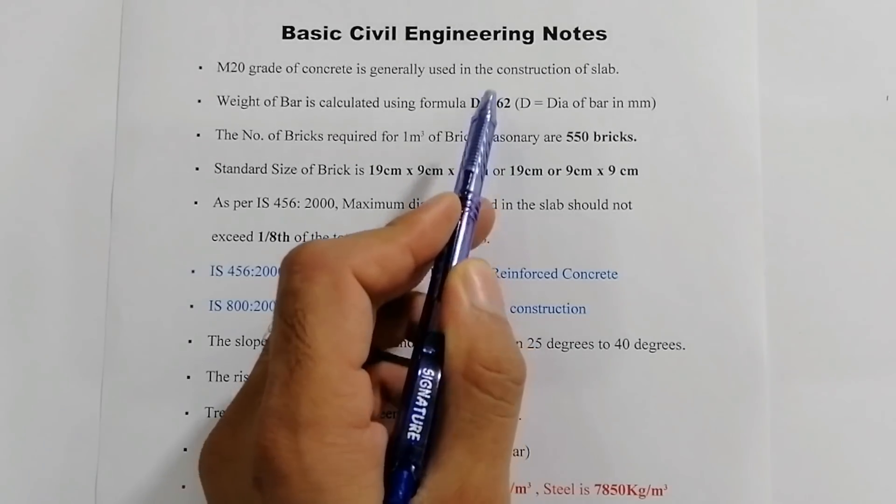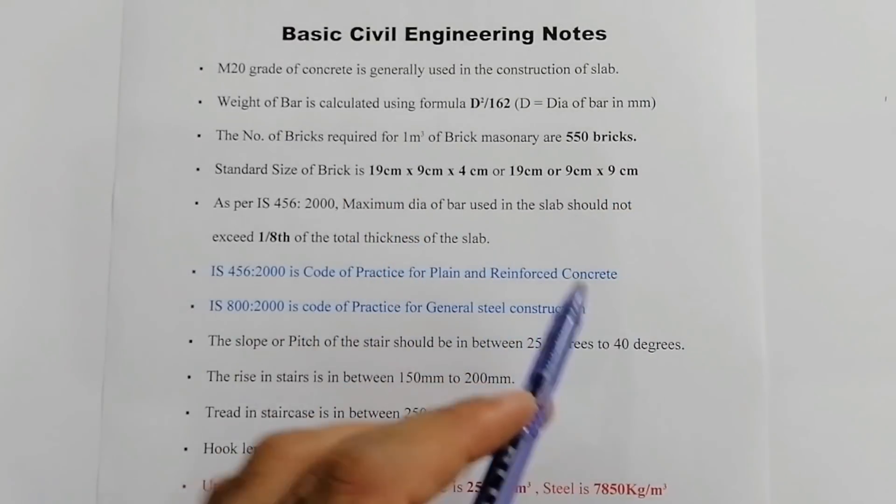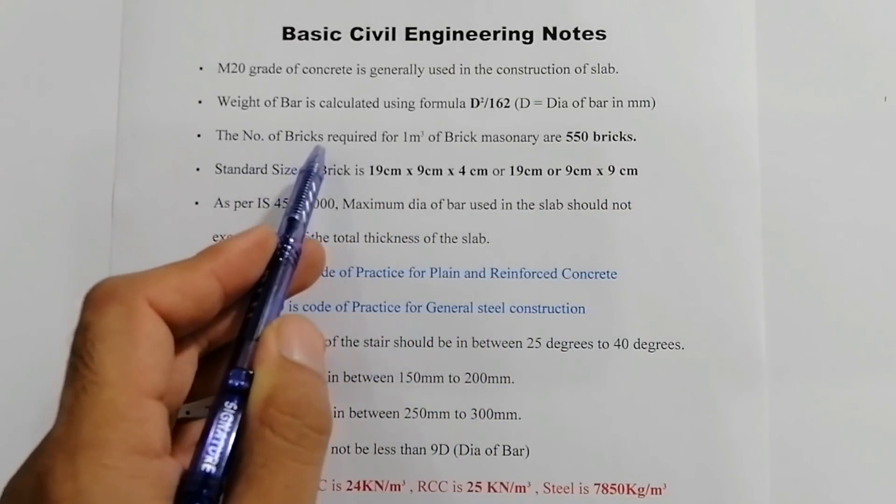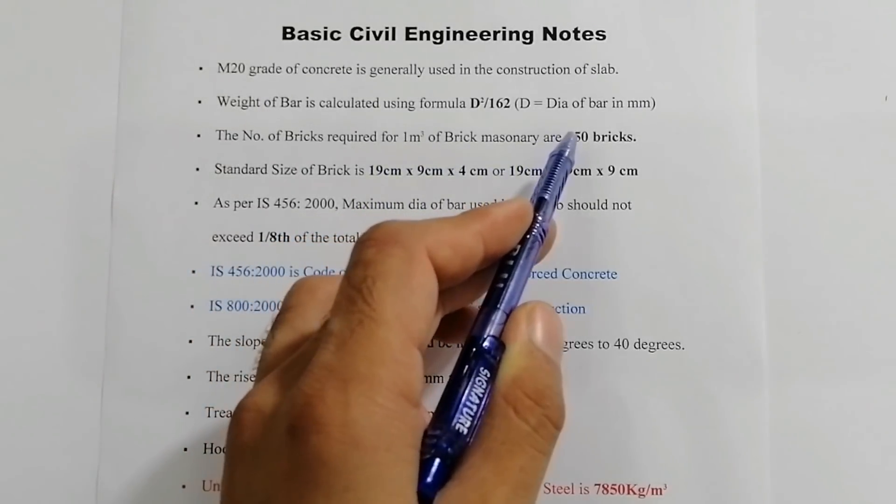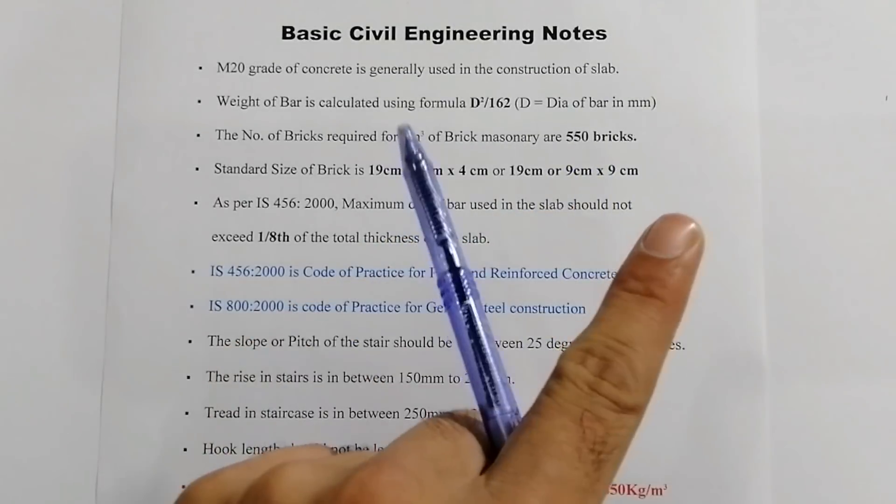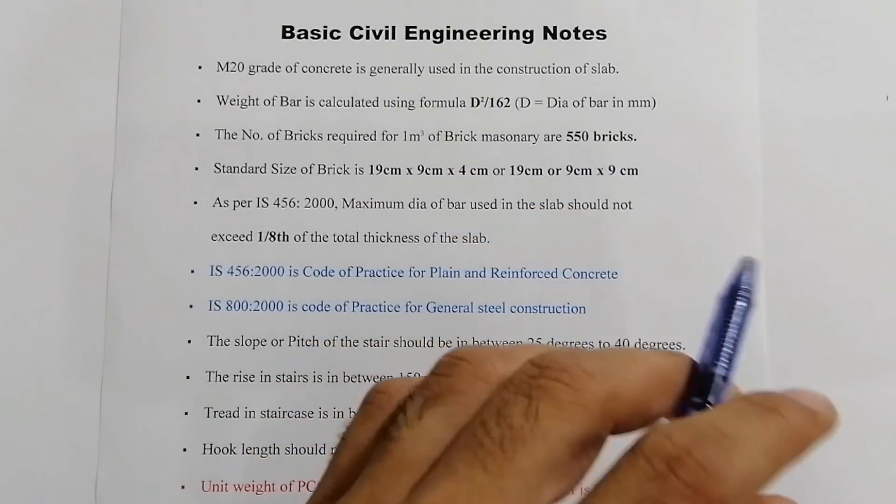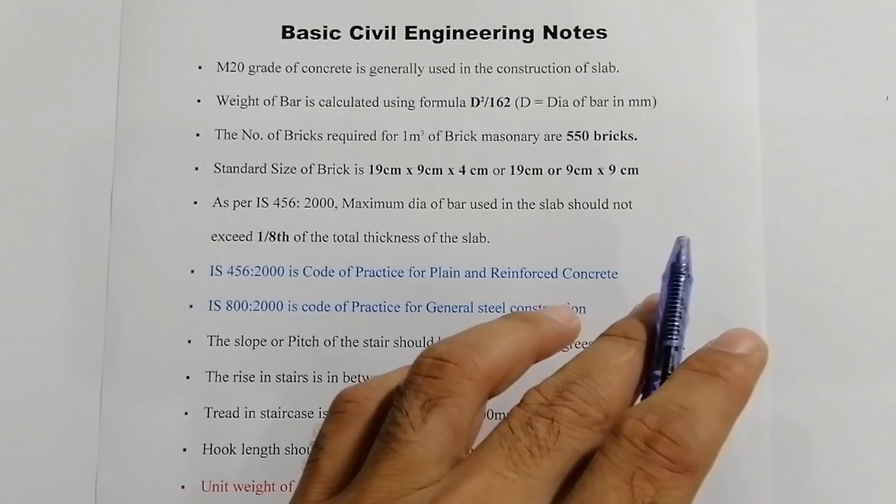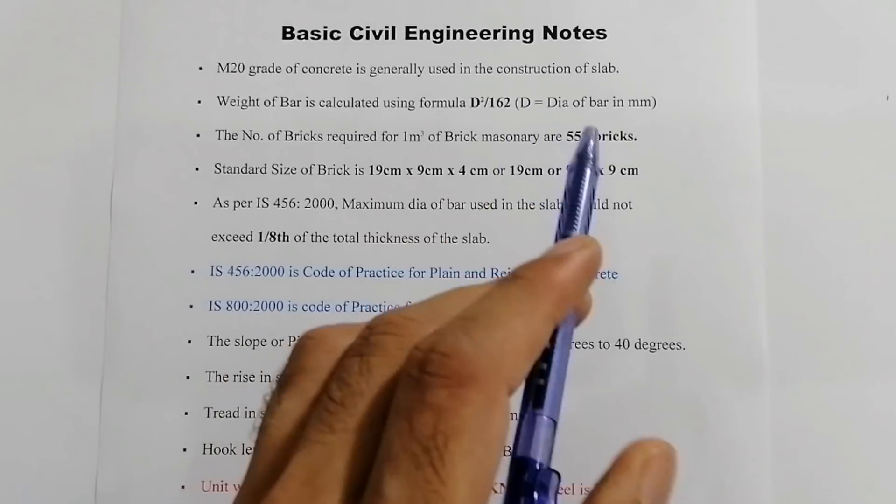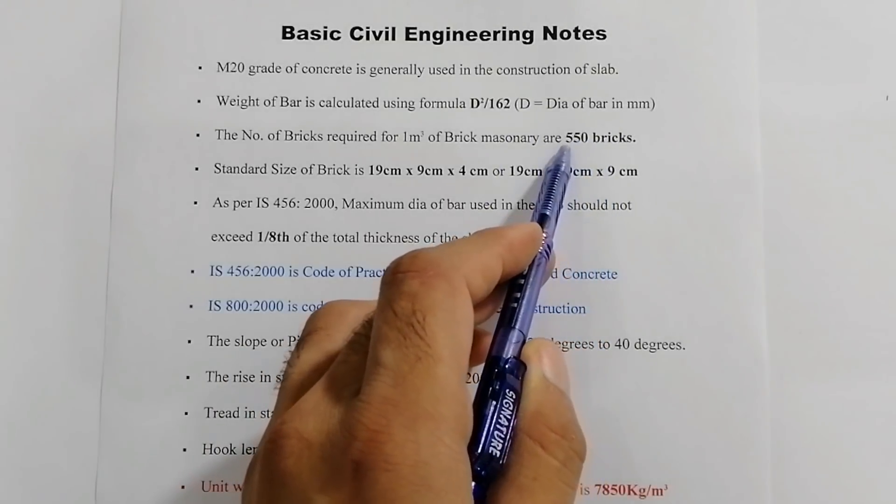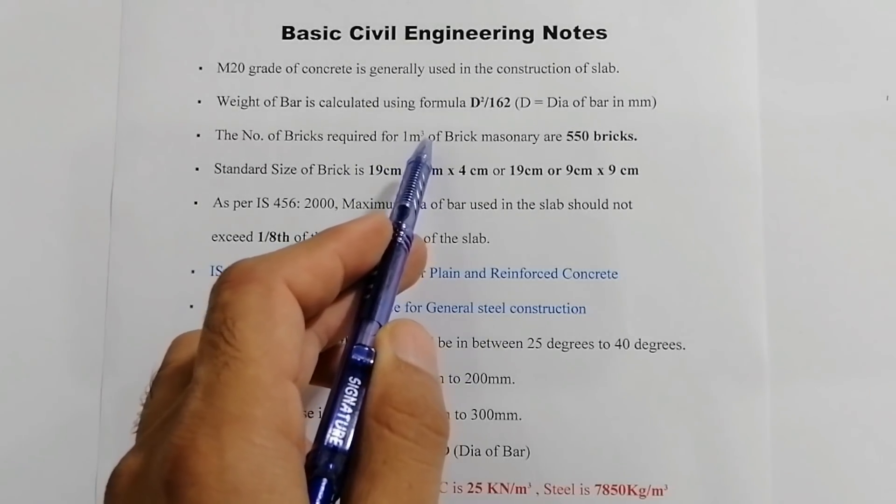The third one: the number of bricks required for one meter cube of brick masonry are 550 bricks. In one cubic meter we can use 550 bricks. In an interview if they ask a question from you—how many bricks are required for one meter cube—we need 550 bricks for one meter cube or for one cubic meter.